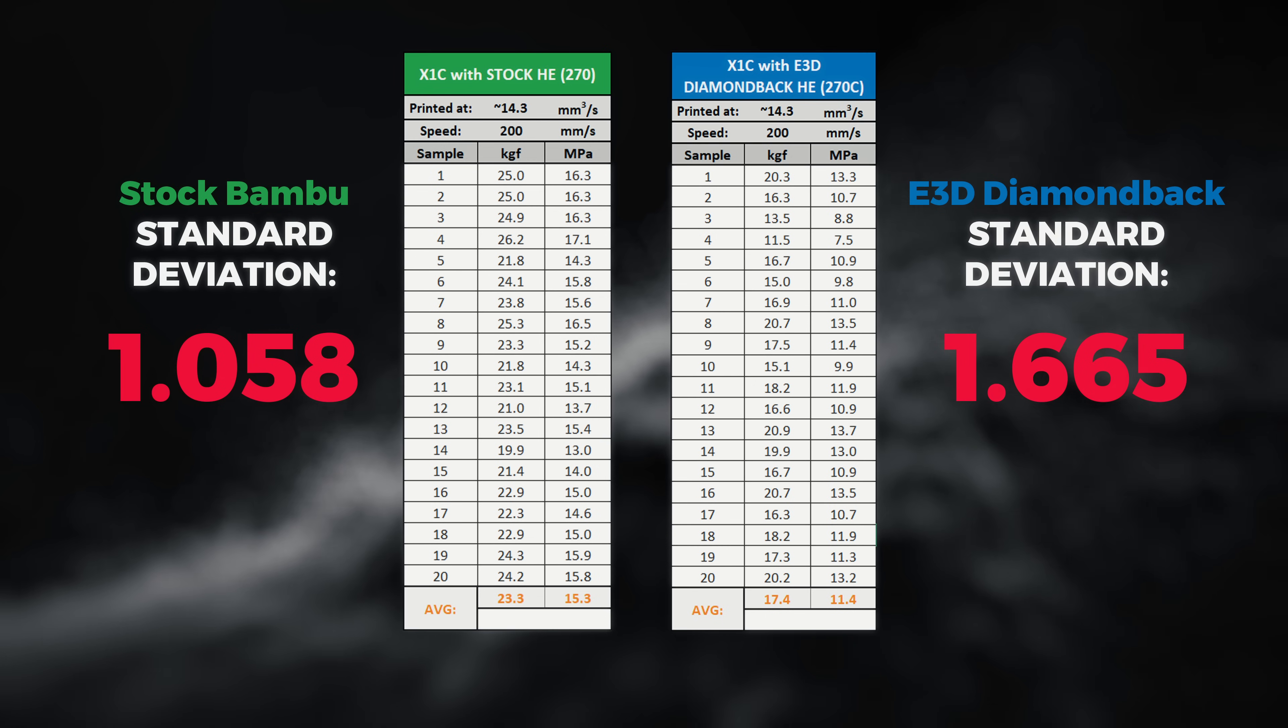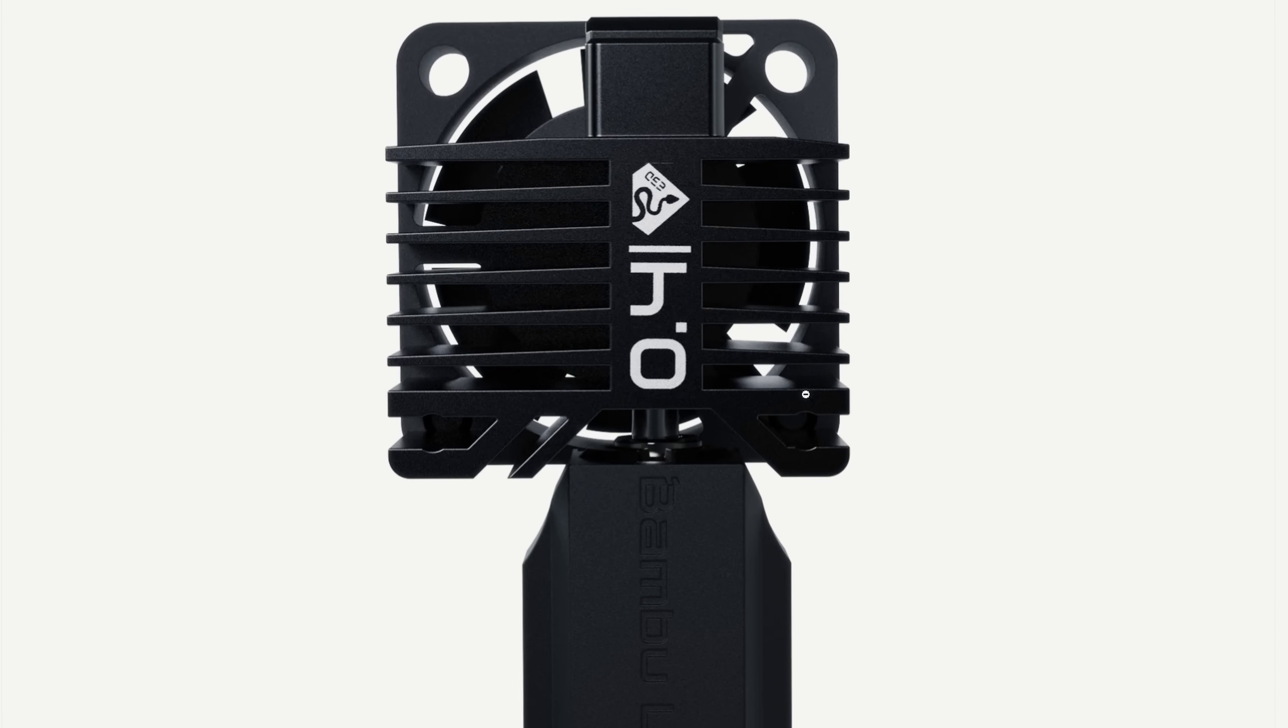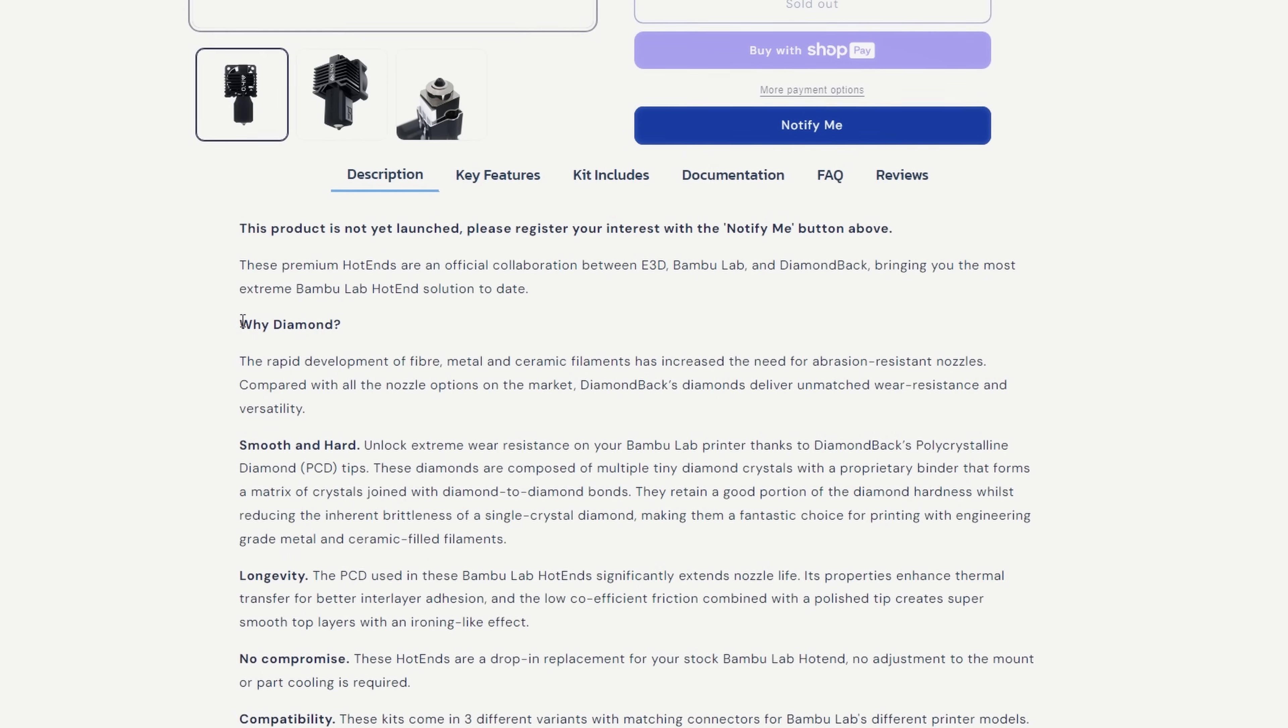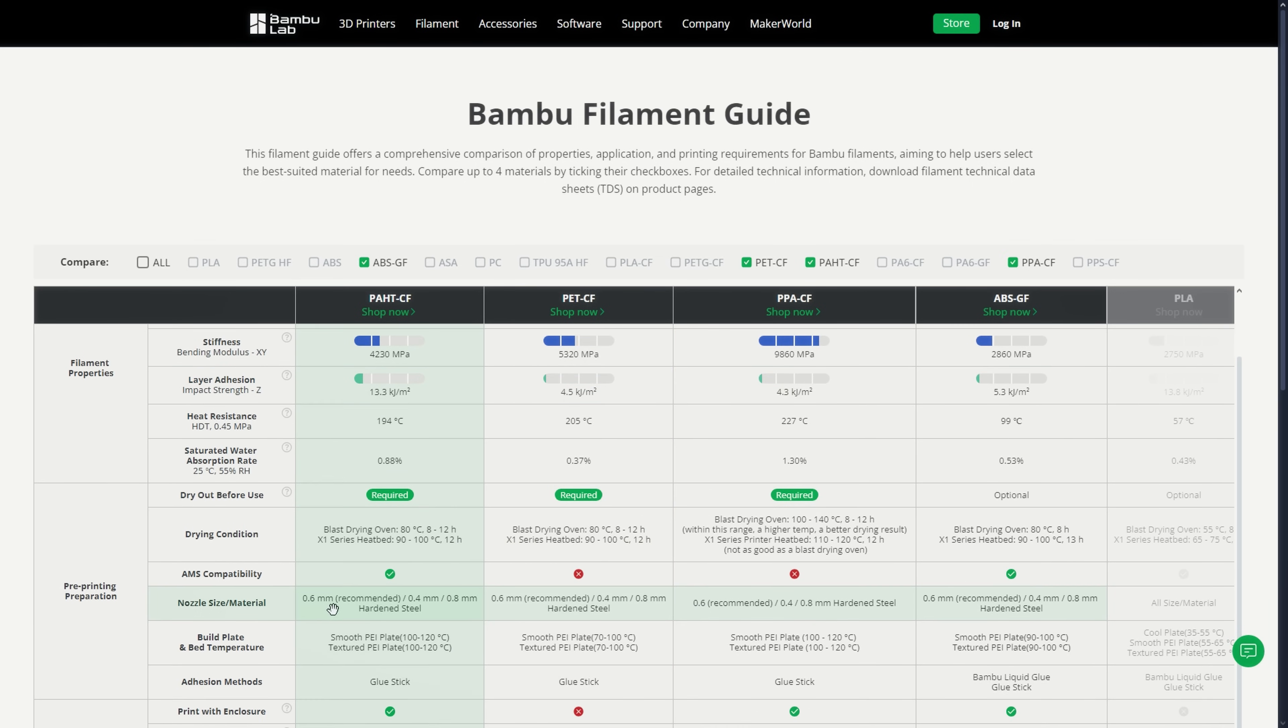So if this truly is the case, releasing the 0.4mm Diamondback hotend seems an odd choice, especially as it was orientated for mainly printing abrasive filaments. Even Bambu Lab themselves recommends the 0.6mm nozzle for these tested filaments.